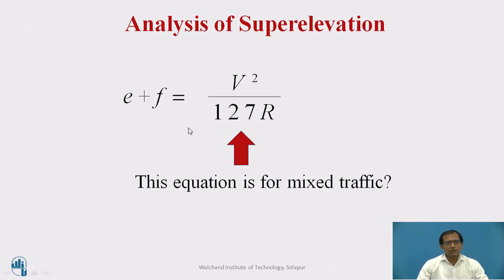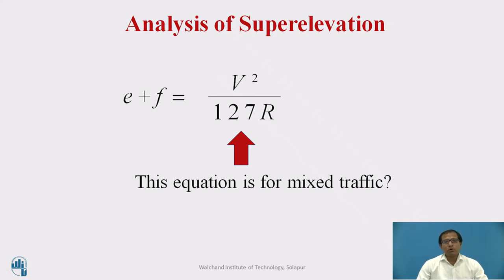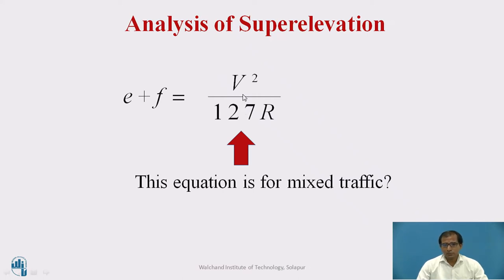In the previous session, we derived the equation E + F = V²/127R, where V is in kmph. Now, does this equation hold good for mixed traffic conditions? The mixed traffic condition requires this equation to meet the requirements of both fast moving and slow moving vehicles. For example, if I calculate the super elevation required for a fast moving vehicle at 100 kmph, the super elevation might be in the range of 5–6%. That super elevation is suitable for high speed vehicles, but may not be suitable for slow moving vehicles.